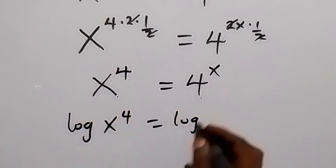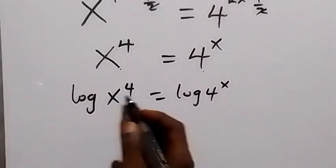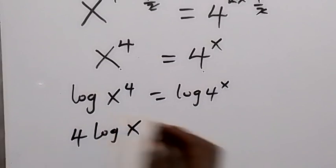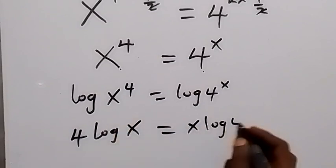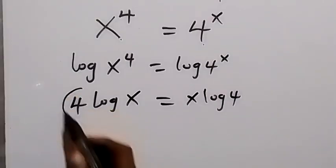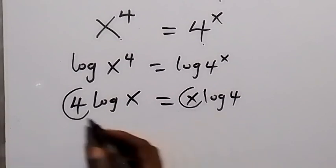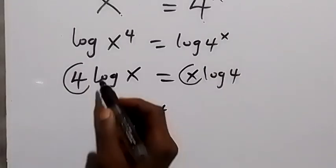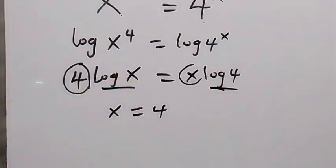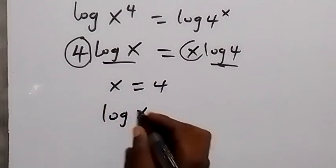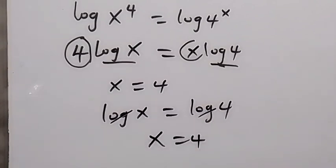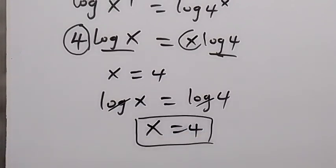Taking log on both sides: log x raised to power 4 equals log 4 raised to power x. Applying the power law of logarithms, we bring the powers to the front: 4 log x equals x log 4. Comparing coefficients, x equals 4 and log 4. Also comparing the log terms directly, log x equals log 4, so canceling the log gives x equals 4. In whichever way, x equals 4.